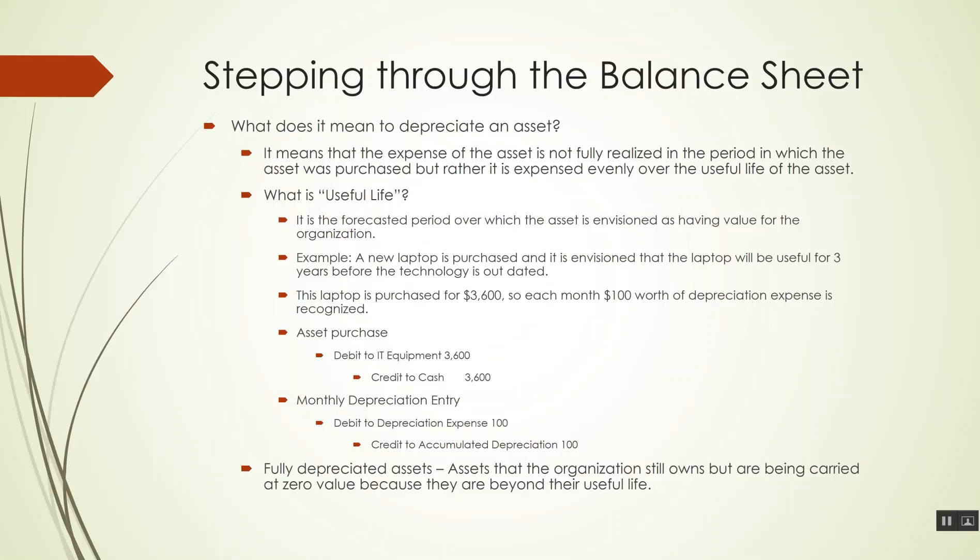So we establish a useful life of three years. Depending upon the asset, it might have a different useful life period — maybe some assets are three years, some are five years, some are 10 to 15 years. There's a lot of information online that will give you guidance as to how long a typical useful life for a given classification of fixed assets should be. In this example, let's say the laptop is purchased for $3,600. We're depreciating that over three years or 36 months, which means each month we're going to realize $100 worth of depreciation expense.